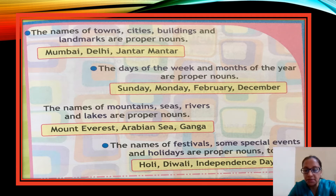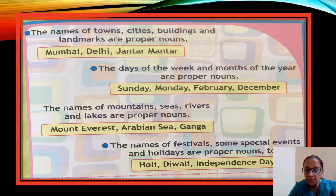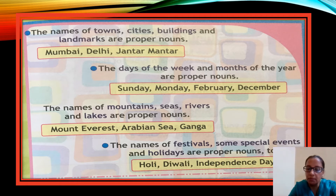The names of festivals, special events and holidays are proper nouns: Holi, Diwali, Independence Day — there is only one of each, each has a particular name. When something is given a particular name, it becomes a proper noun. When there is no particular name — like cat, lion, dog, any school, any city — it is a common noun. But when a name is given, for example our school 'Shri Guru Gobind Singh College at Public School,' that becomes a proper noun.